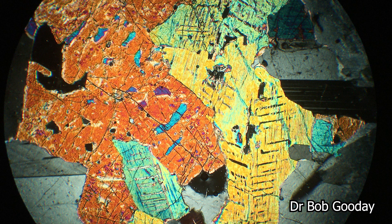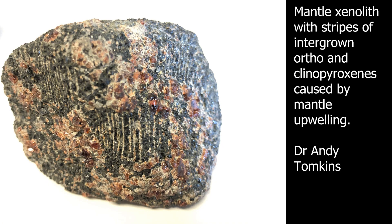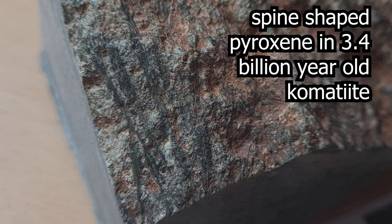Pyroxenes can be found in most ultramafic and mafic igneous rocks, as well as in some intermediate rocks. Mafic rocks are rich in iron and magnesium, and ultramafic rocks are very rich in iron and magnesium. This includes rocks like pyroxenites, peridotites, gabbro, komatiite, basalt, and harzburgite.